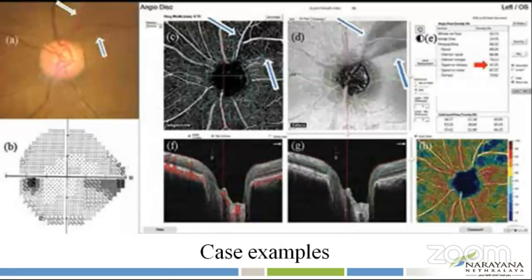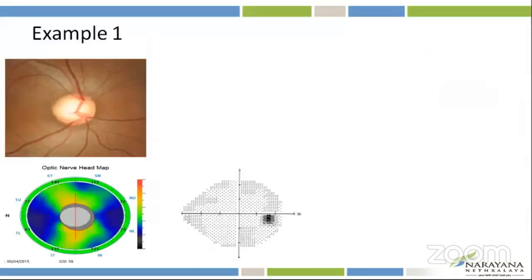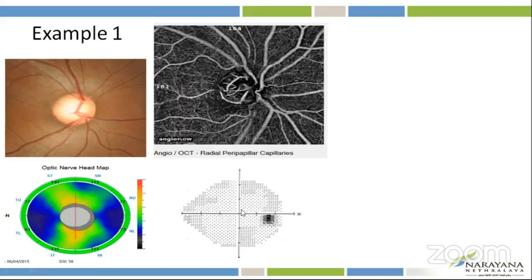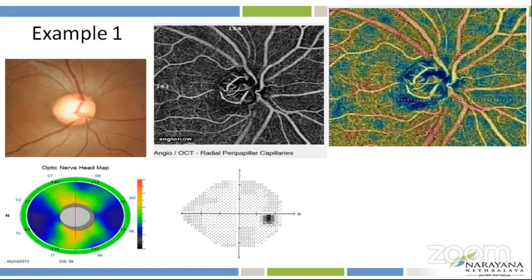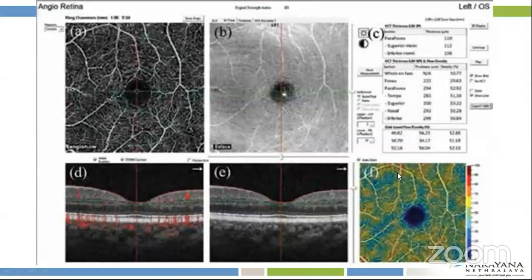Coming to a couple of case examples. This is a large optic disc showing a large cup-to-disc ratio with a normal RNFL and a normal visual field. The peripapillary OCTA report shows normal radial peripapillary capillaries on the angiography image and the heat map with normal vessel densities.